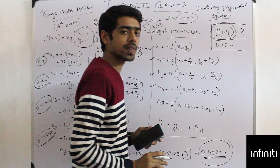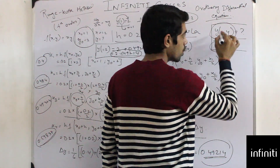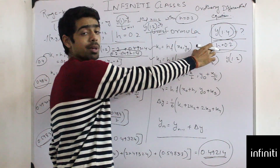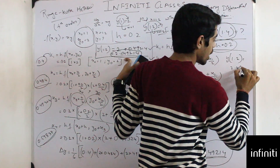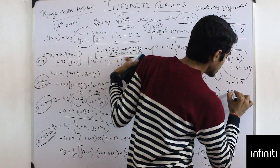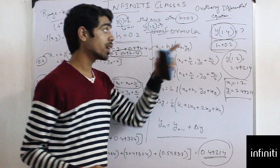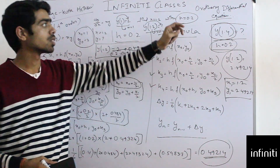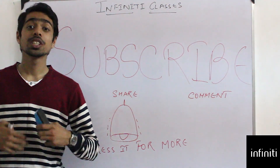Next, as a task, calculate y(1.4) with h = 0.2. To do this, we need y(1.2) = 2.49214 as our starting point, meaning x₁ = 1.2 and y₁ = 2.49214. By the same procedure, we can calculate y(1.4). This is the fourth-order Runge-Kutta method under ordinary differential equations. Thanks everyone — if you have any queries, comment below and share this video.